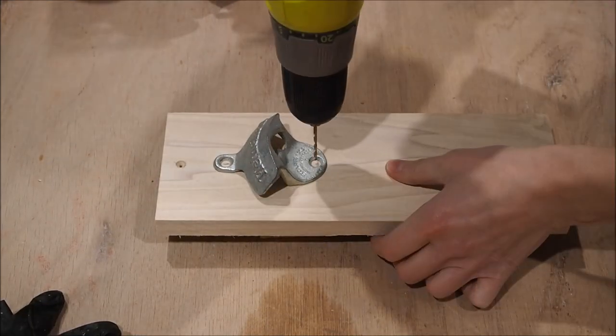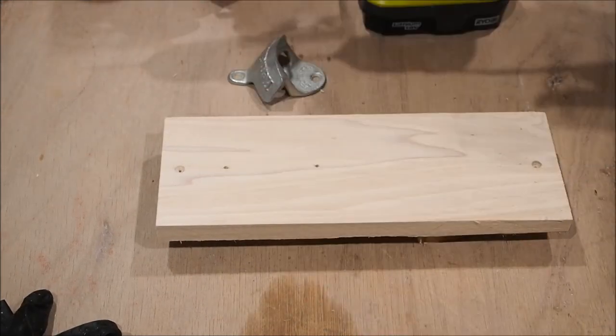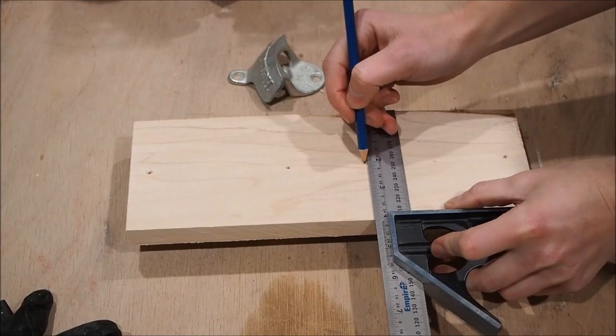I centered the bottle opener in the top third of the plaque and made some pilot holes. I then flipped over the plaque and marked where I would drill the holes for the magnets.